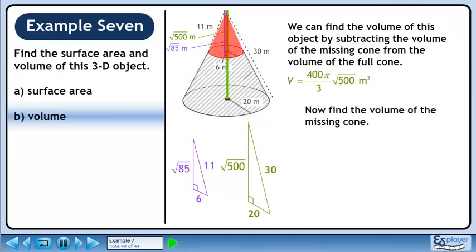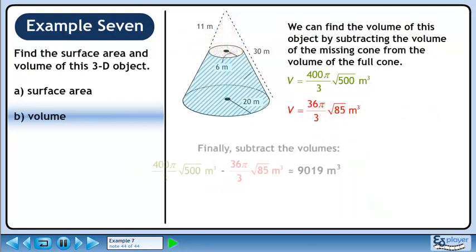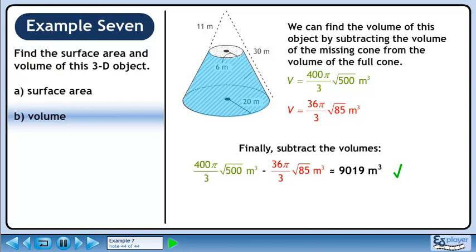Now find the volume of the missing cone. The volume of a cone is V equals 1 over 3 pi r squared h. Plugging in the radius and height of the missing cone, the volume is 36 pi over 3 times the square root of 85 cubic meters. Finally, subtract the volumes to get approximately 9019 cubic meters. This is the volume of our object.